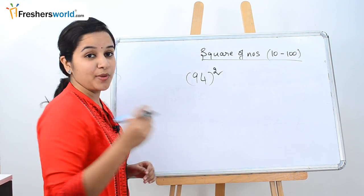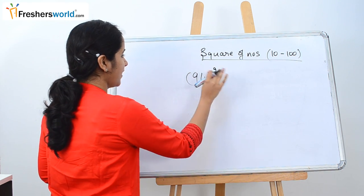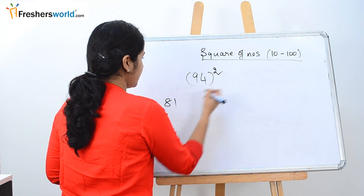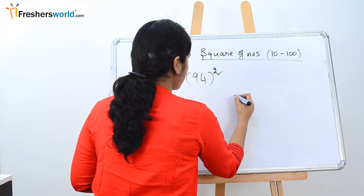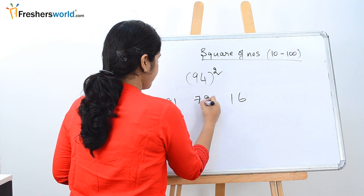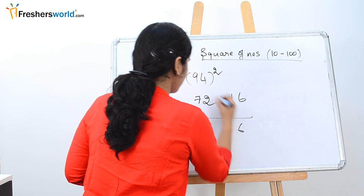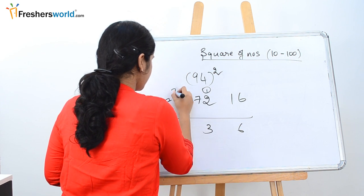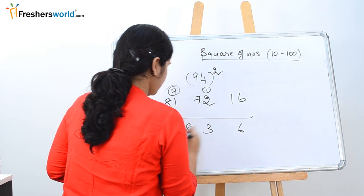So let's solve another sum. So the question that I have given is 94 square. How to find it easily? 9 square is 81. 4 square is nothing but 16. 9, 4 is 36. 36 into 2 is 72. So 6, 1 is carried over here. 73, 7. So 8, 8, 3, 6.